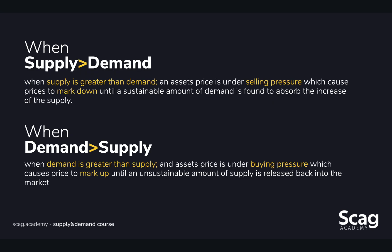What happens when things fall out of equilibrium? If supply were to suddenly get greater than demand, that asset's price — or the egg's price — is going to undergo some selling pressure, which causes prices to mark down until a sustainable amount of demand, or new egg buyers, is found to absorb that increase in supply.